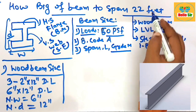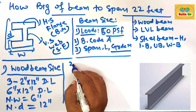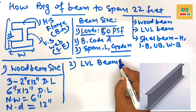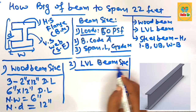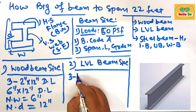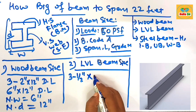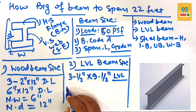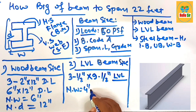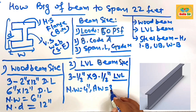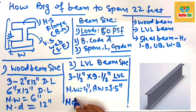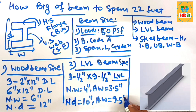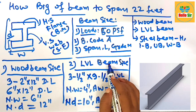For the LVL (laminated veneer lumber) beam size required to span 22 feet: use a double-ply LVL beam with a thickness of 3.5 inches and a depth of 9.5 inches. The nominal width is 4 inches, the actual width is 3.5 inches, the nominal depth is about 10 inches, and the actual depth is 9.5 inches. This is the dimension of the LVL beam size required to span 22 feet.